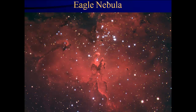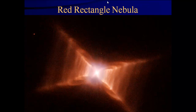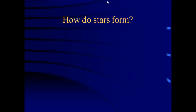We discussed the Eagle Nebula and the Pillars of Creation. There's also the California Nebula, the Red Rectangular Nebula, and the Witch Head Nebula. But those are just big balls of hydrogen and helium gas with some dust mixed in. The question is: how do you get that into a star?